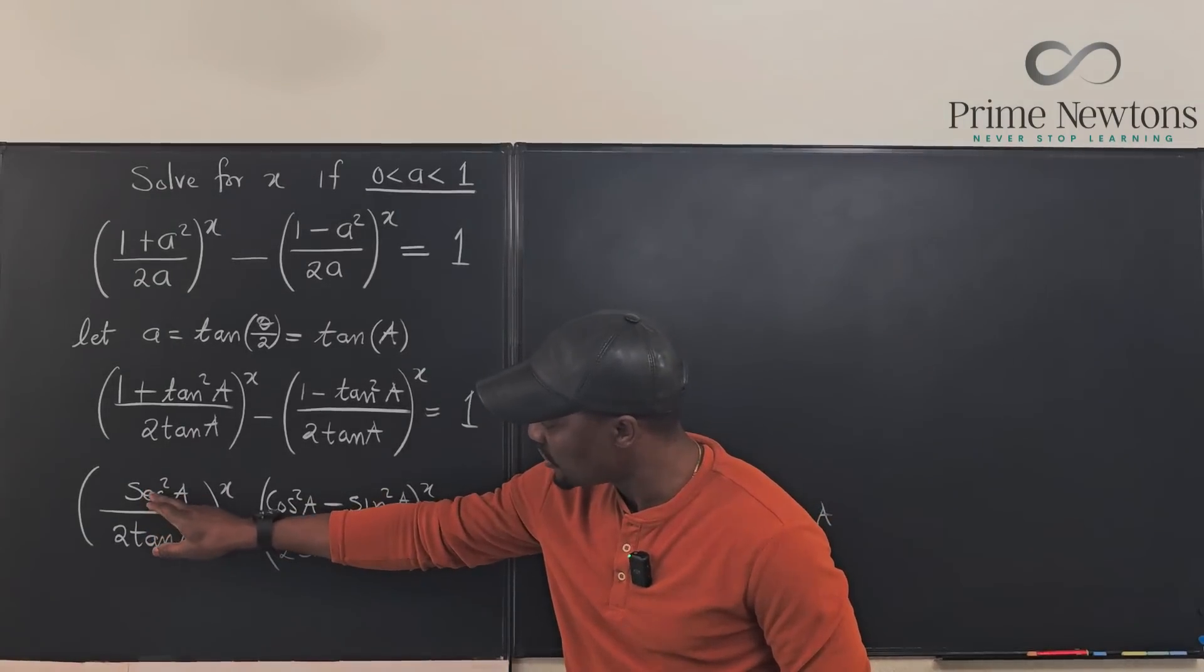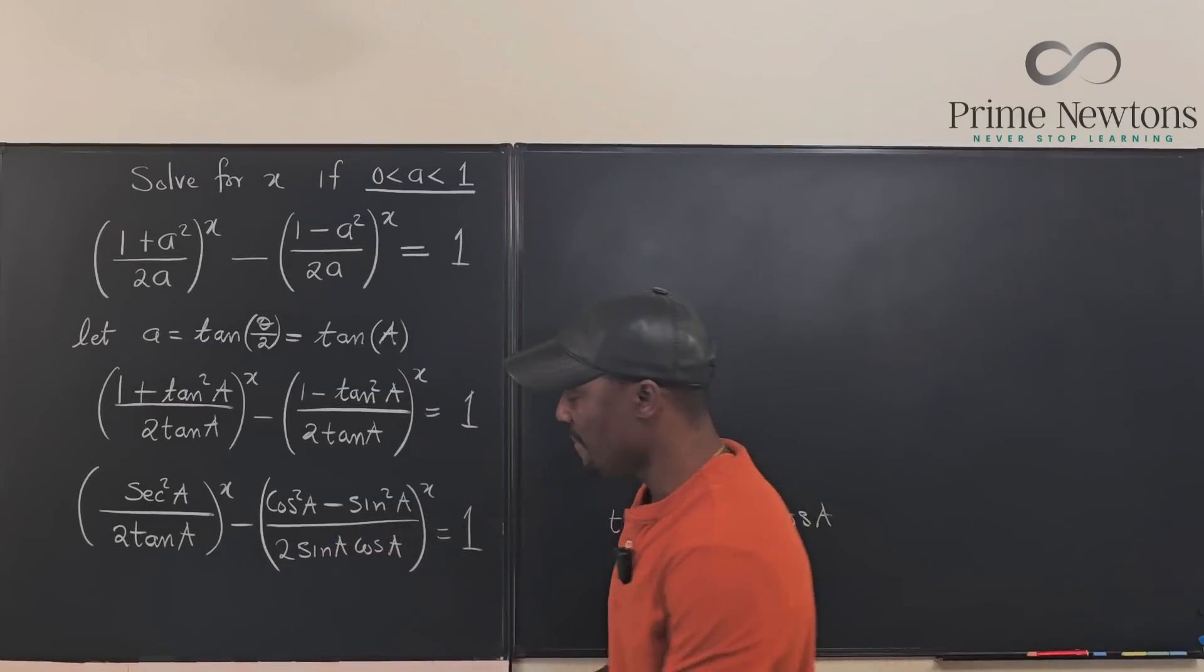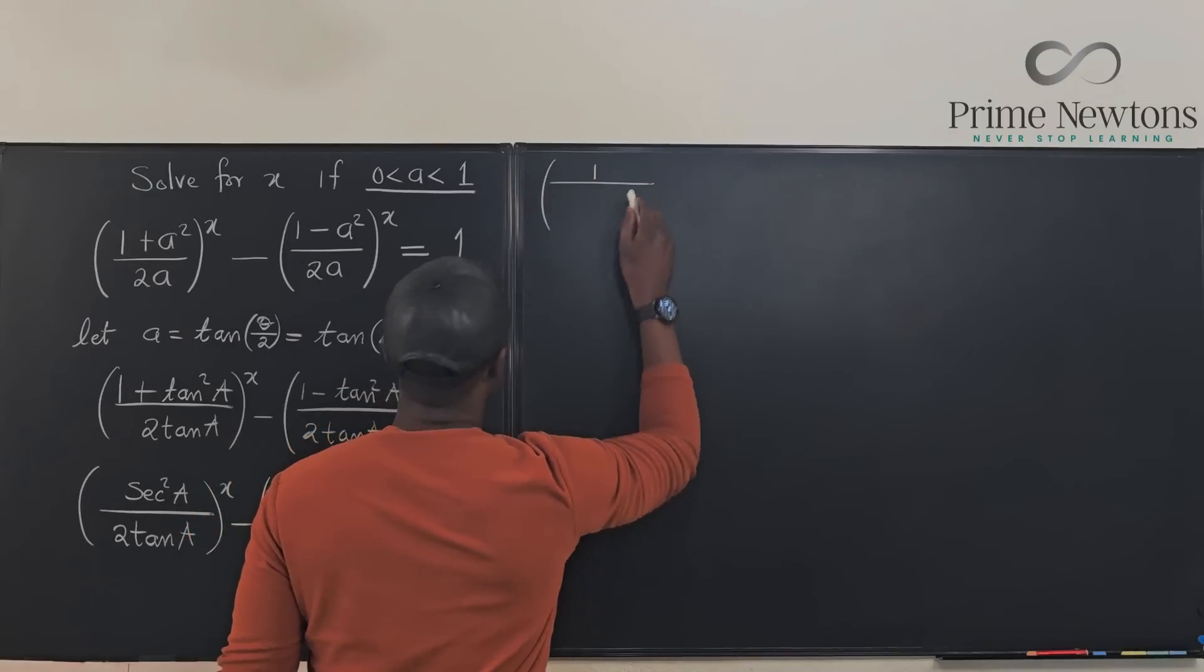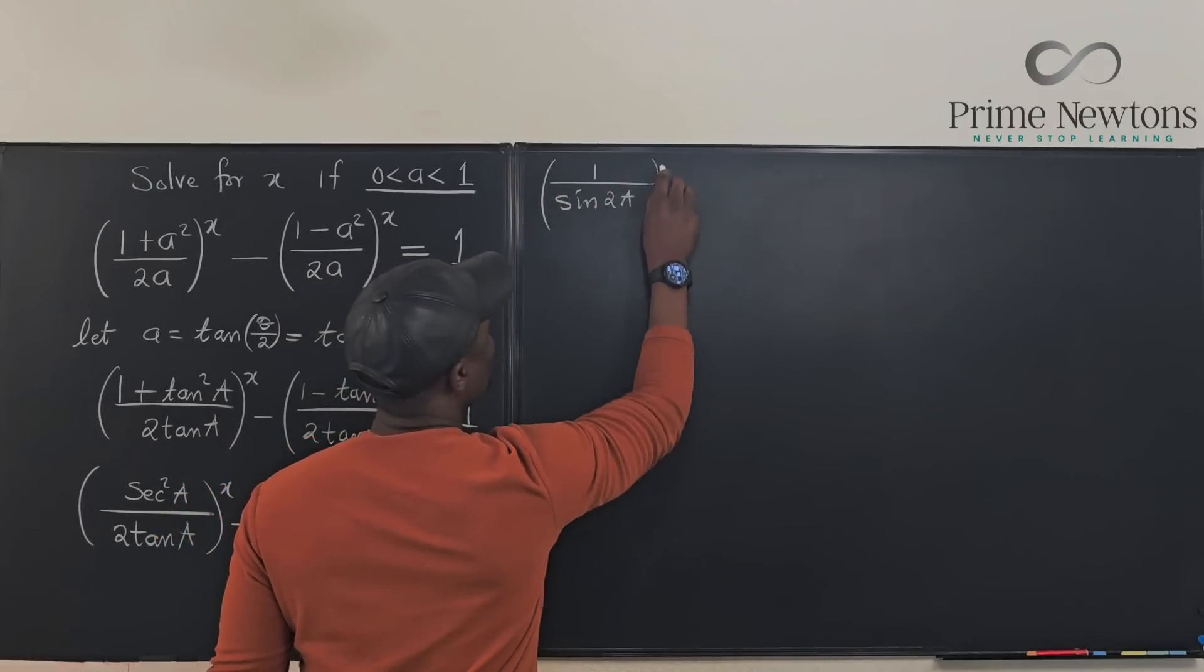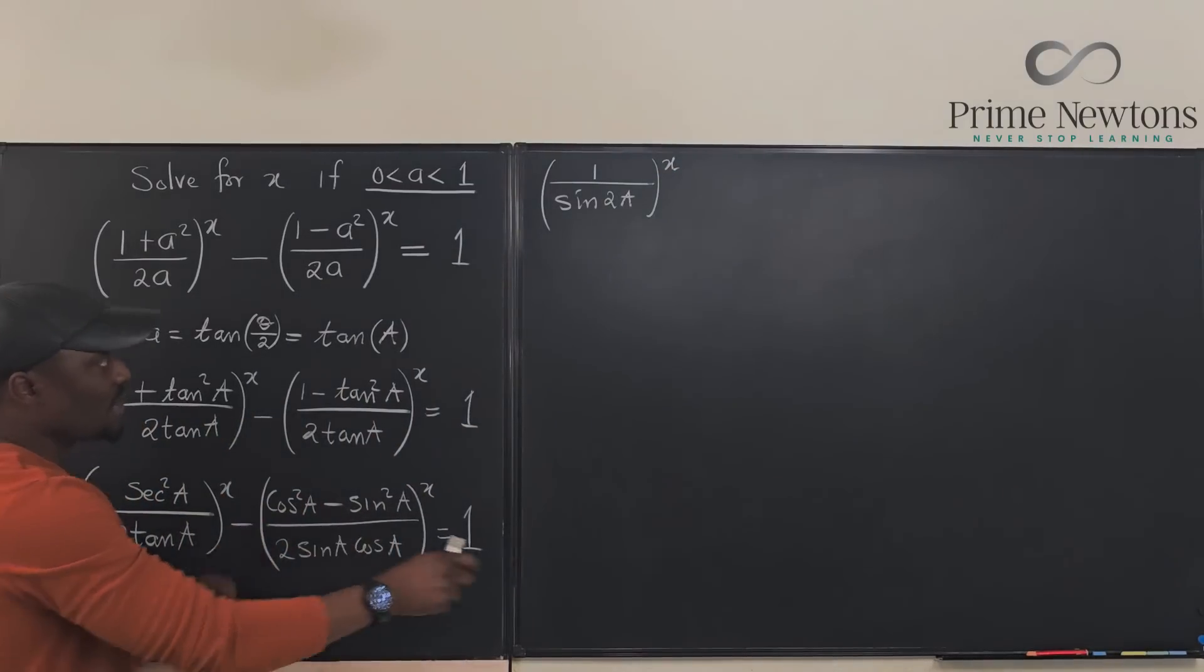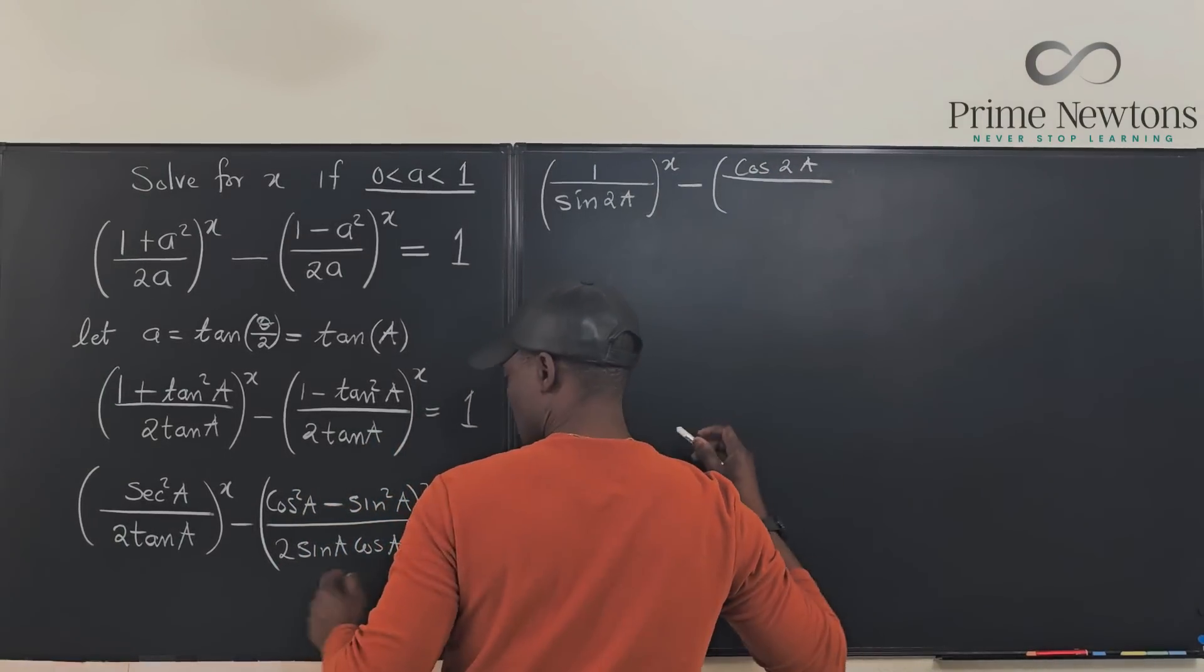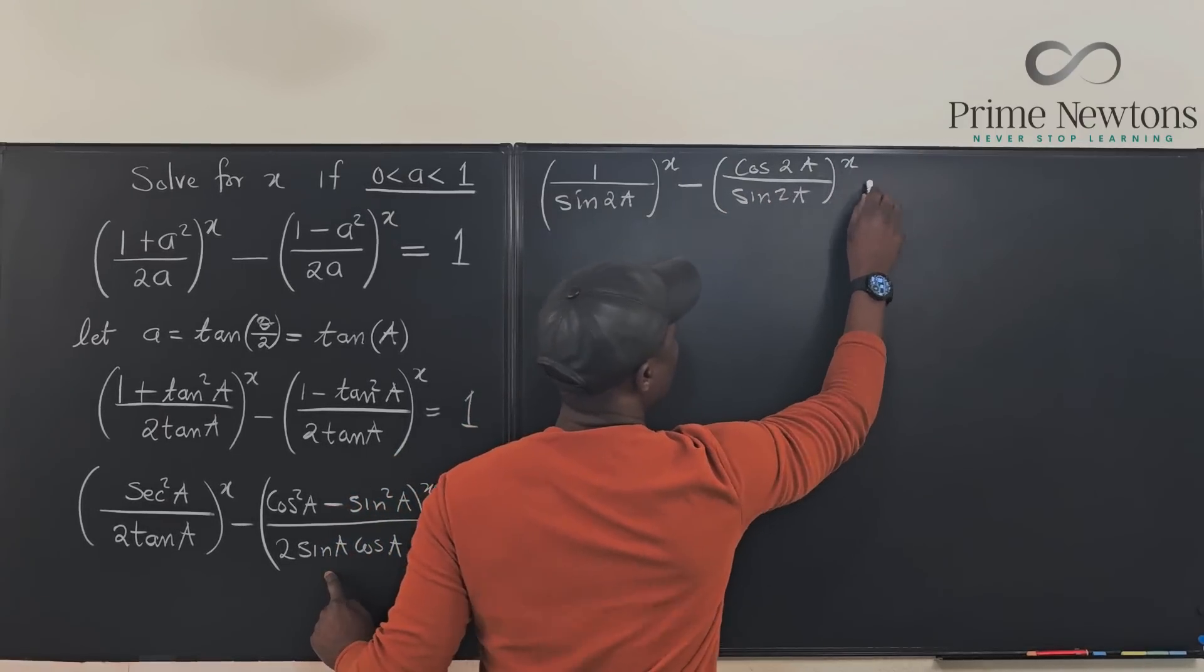Now is there something I can do with this? Secant squared A if I drop the secant squared down here what would I get? This is going to be one over cosine squared and the cosine squared drops. It's going to be exactly what is here. One over this is going to be cosine 2A. Nice. Raised to power x. And we're going to do the same thing here. This is cosine 2A over sine 2A to the x equals one.